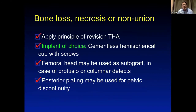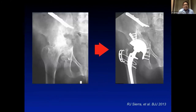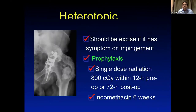For bone loss, necrosis, and nonunion, apply the principles of revision total hip arthroplasty. The preferred implant is a cementless hemispherical cup with multiple screw fixation. The femoral head may be used as autograft for protrusio or column defects. Posterior plating may be used for pelvic discontinuity. A published Mayo Clinic case in BJJ demonstrated posterior plating combined with a cementless cup for pelvic discontinuity. For heterotopic ossification, it should be excised to improve range of motion, with radiation or NSAIDs as prophylaxis for six weeks.